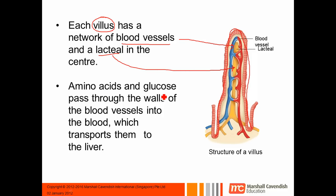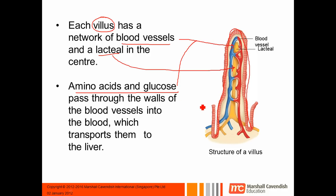Amino acids and glucose actually pass through the walls of the blood vessels and get transported by the blood to the liver. So amino acids and glucose are absorbed through these blood vessels.